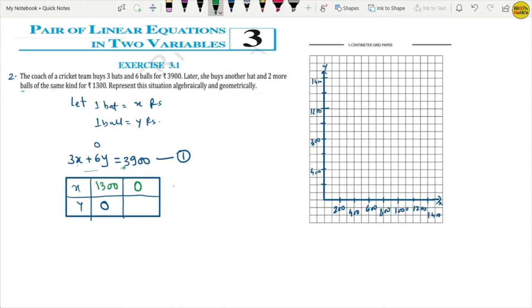If I will put 0 in place of x, how much will I get? 3,900 divided by 6. Y equals to 650. I hope it will be so clear that we will get the points.